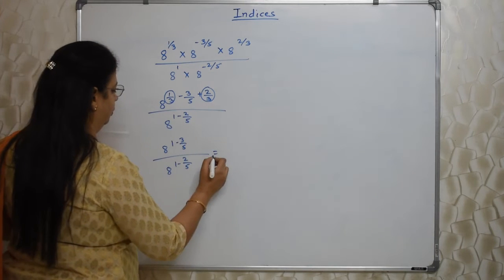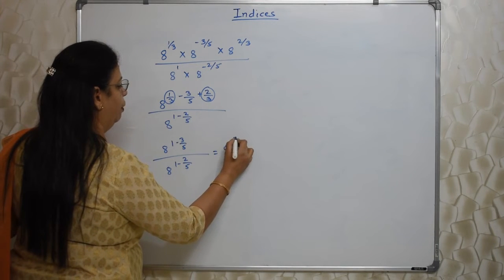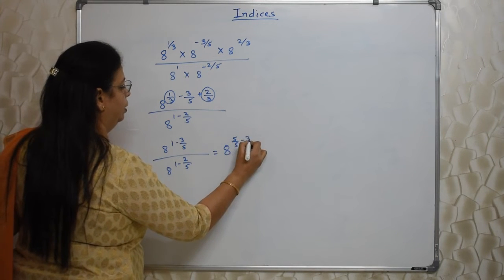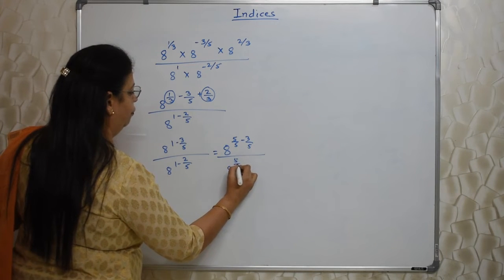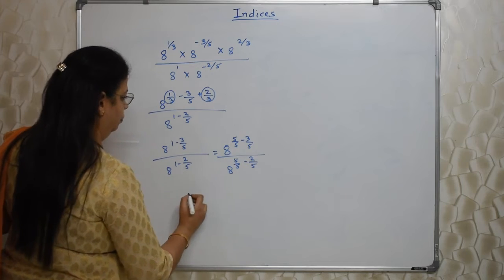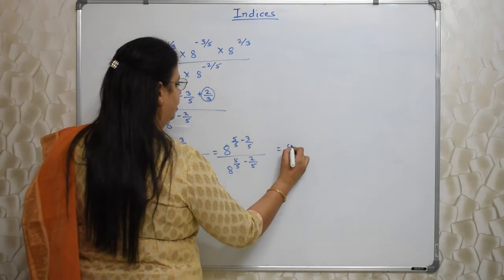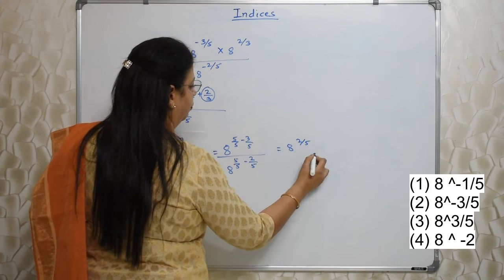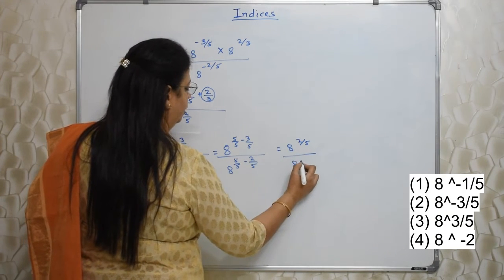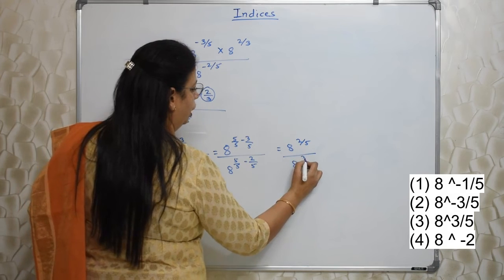Now we will solve this. 1 means 5/5 minus 3/5. Similarly here, 8^(5/5 - 2/5). So it is 8^(2/5). Here it is 8^(3/5).